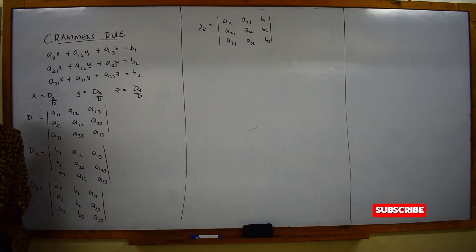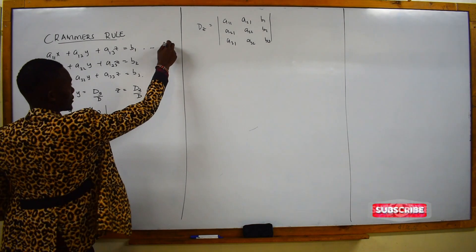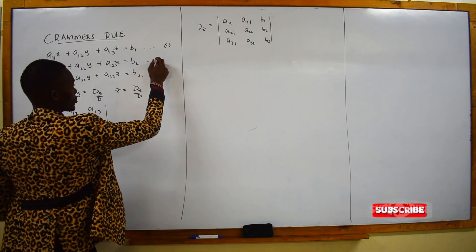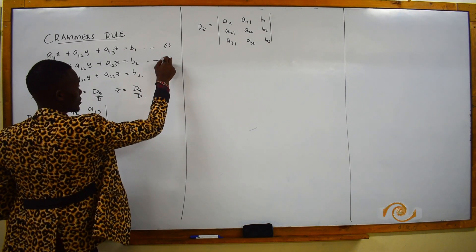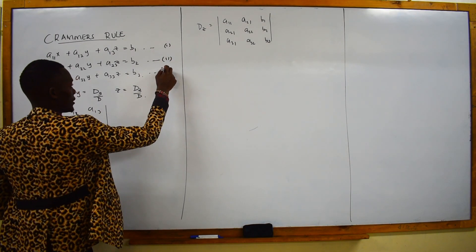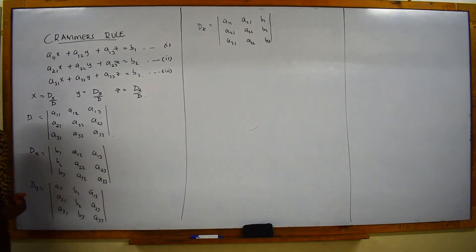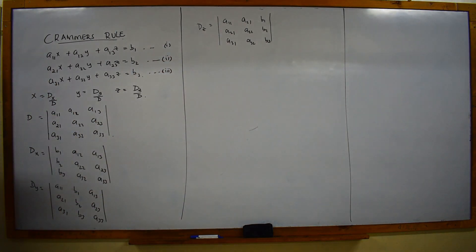So we have Cramer's rule. Assuming we have equations — equation 1, equation 2, and equation number 3. So we have 3 equations here.